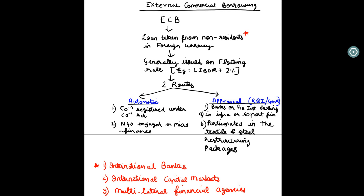Automatic route mein ECB kaun le sakta hai? First — companies registered with the Companies Act, and second — NGOs which are engaged in microfinance. These two categories fall under the automatic route. Whereas banks or financial institutions engaged in infrastructure or export finance, or those banks which have participated in the textile and steel restructuring packages, they have to take RBI approval for borrowing funds from non-residents. I hope you've understood this concept — ek baar acche se likh liya toh yaad ho jayega. Bye!